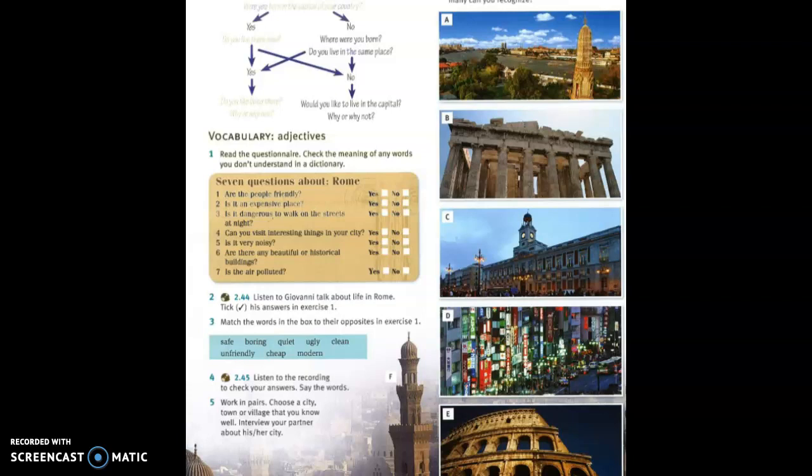Then let them look at the sentences, read them through, one to seven, and then they listen to Giovanni and tick the answers, either yes or no. At the end of the listening, put the students into pairs or get them to discuss as a group what they think the answers are. That will allow you to monitor and to listen and to think, do I need to play it again? Do they have enough answers? Have they been successful?